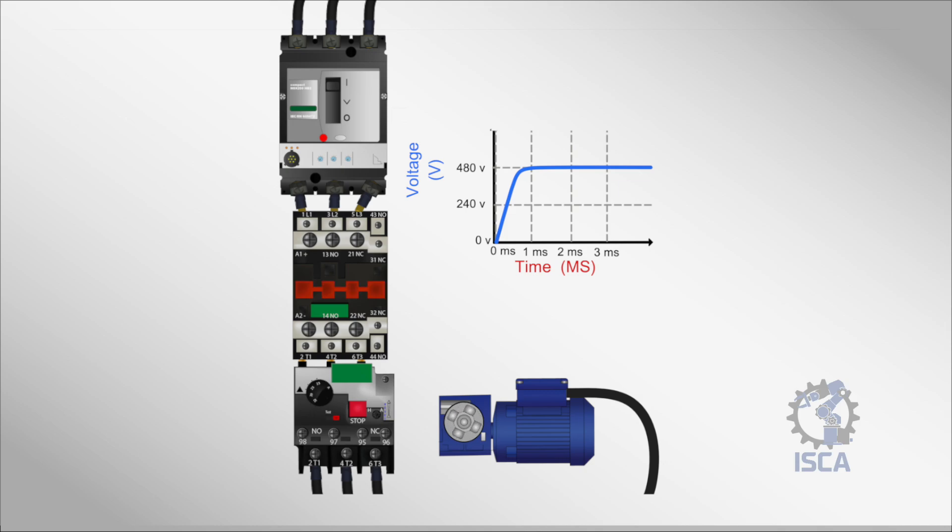Larger motors often require different starting methods to manage the inrush current and reduce stress on both the motor and the power system. At its core, a DOL starter consists of two main components: a contactor to switch the motor on and off, and an overload protector.